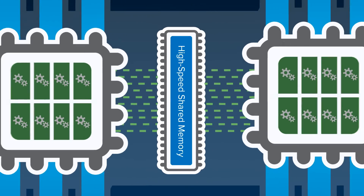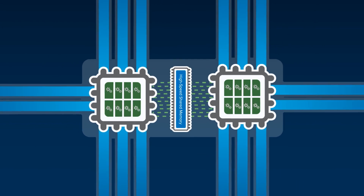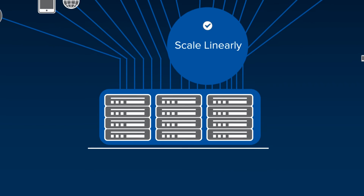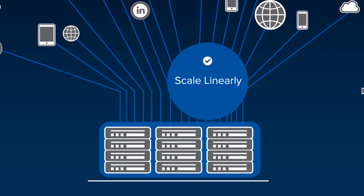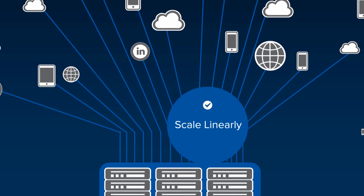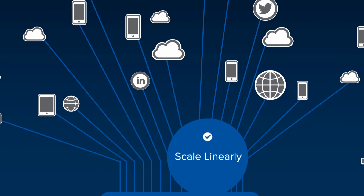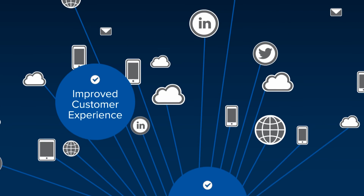It's much more efficient. For your data center application delivery controller, that means you can scale linearly to meet increased traffic demands and keep predictable application service levels, all without adding unnecessary computational or memory resources. For your business, that means an improved customer experience and reduced expenses.